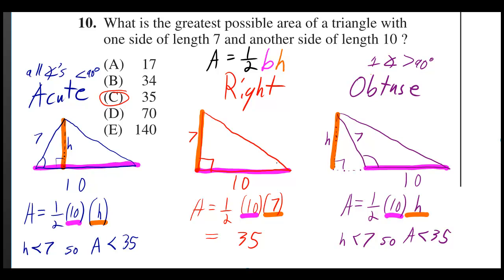In a right triangle, your base can be one leg and your height can be the other leg. So in this case, just one half times 10 times 7, which is 5 times 7, which is 35. But that's actually going to be the biggest amount of area you could get.